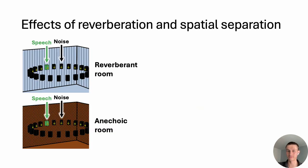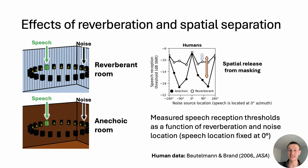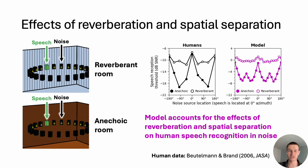That's our model of speech recognition in noise. What's nice about our current multi-task model is that we can also look at spatial speech perception. We can measure the combined effects of reverberation and spatial separation on speech recognition. We simulate an experiment from Butelman and Brand that measured speech reception thresholds in both reverberant and anechoic conditions as a function of the separation between speech and noise. The speech location was fixed straight ahead at 0 degrees and they varied the noise location. Speech reception thresholds get better when the noise is more off to the side — spatially separated from the speech. This spatial release from masking is much larger in anechoic than in reverberant conditions. We measured our model's speech reception thresholds in analogous conditions, and qualitatively the model accounts for these effects: it exhibits spatial release from masking, and the effect is larger in anechoic conditions than in reverberant conditions.